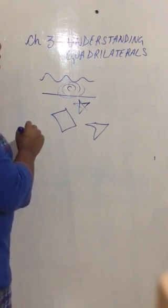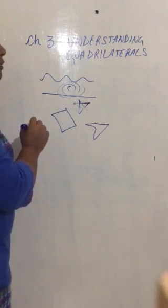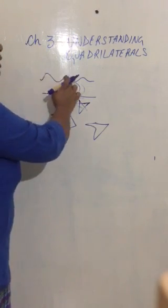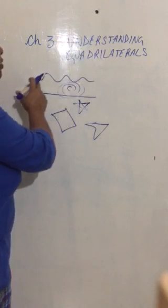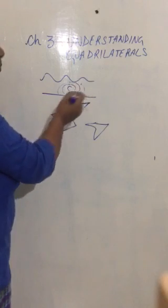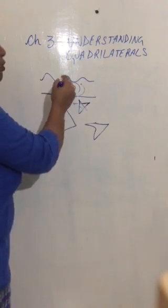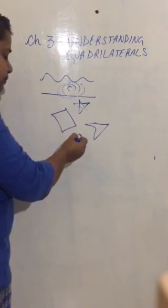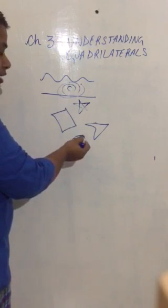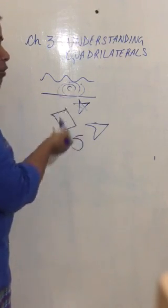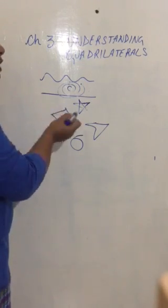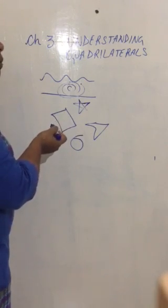Now let us understand what is an open curve. A curve that does not end at the starting point — like, I started here but went somewhere else and did not finish at the starting point. So these are all open curves. A curve that does not end at the starting point is called an open curve.